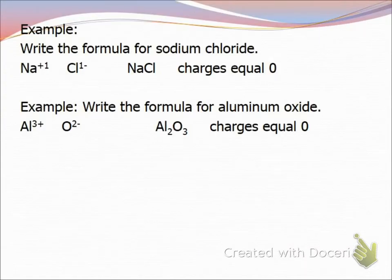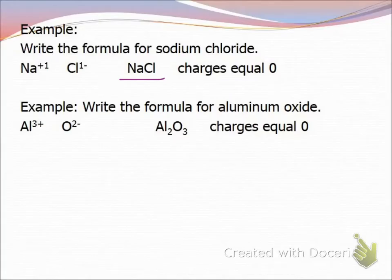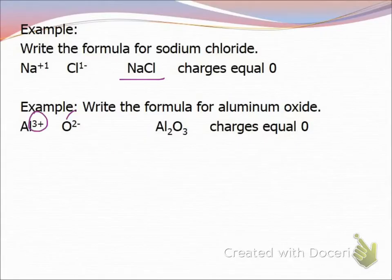Here's an easy example: sodium chloride. Sodium's charge is +1 and chlorine's charge is −1, so they go together in a one-to-one ratio. Aluminum and oxygen are different — aluminum has a +3 charge and oxygen has a −2 charge. The smallest common multiple of three and two is six, so I need two aluminums and three oxygens, giving Al₂O₃.